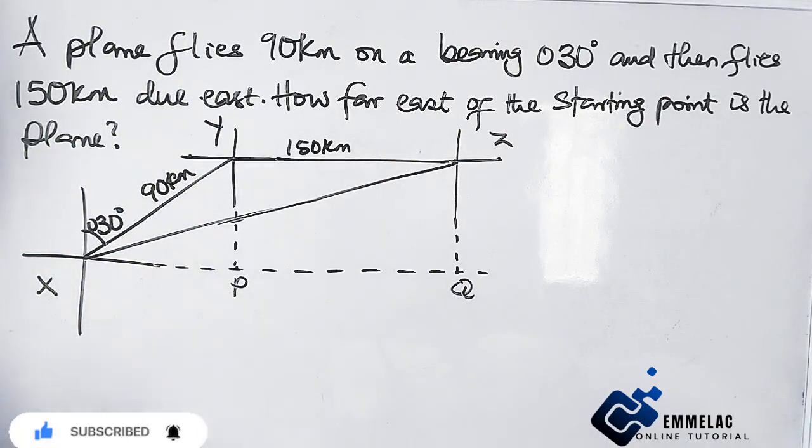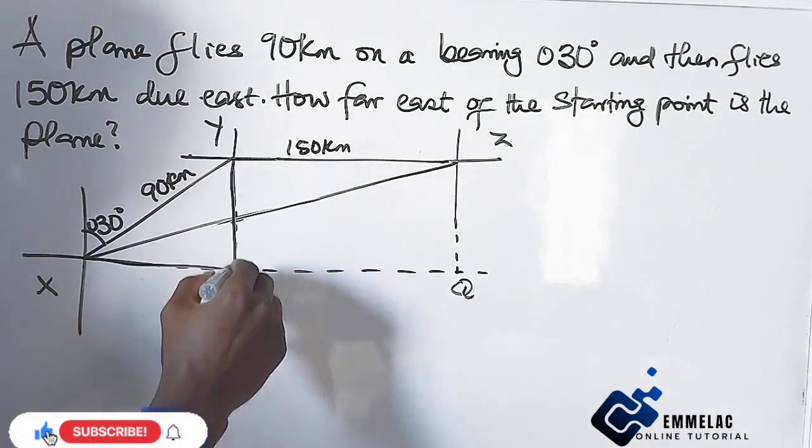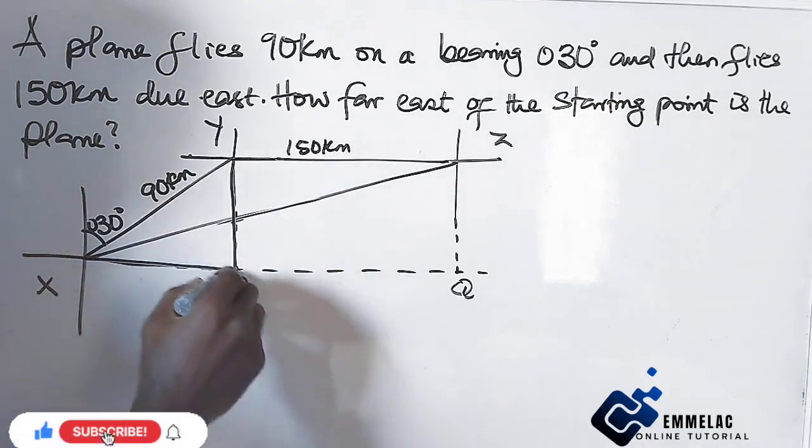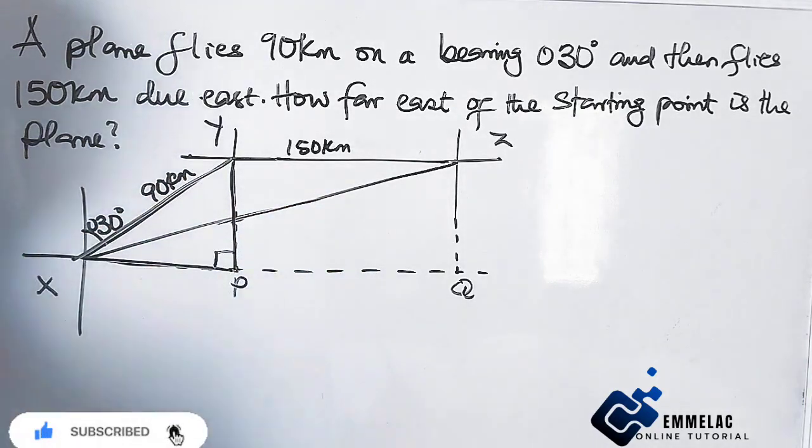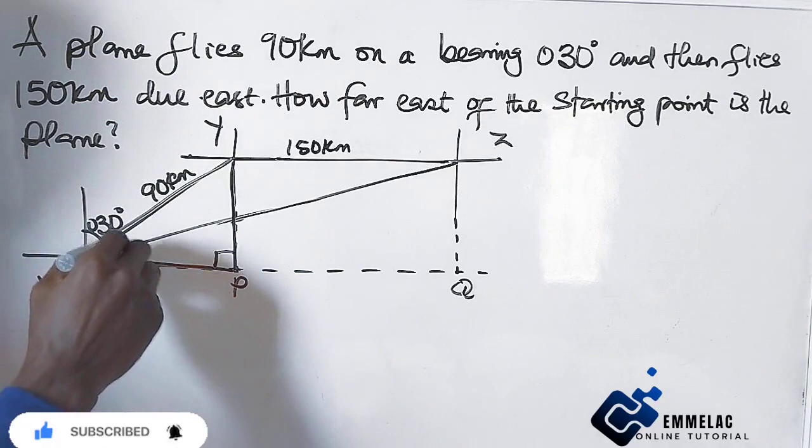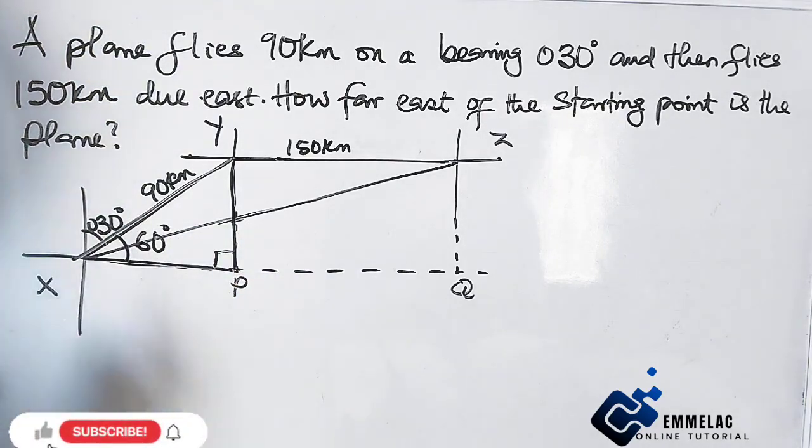Now for us to calculate this, what we just need to do is bring out this triangle. We can see this right triangle, and this is 90 degrees, after which here will be 60 degrees.